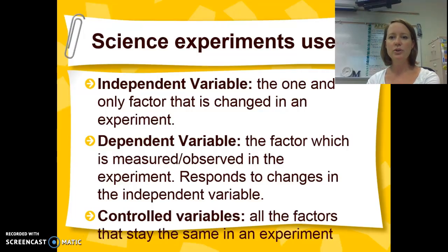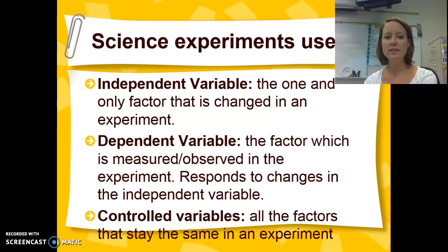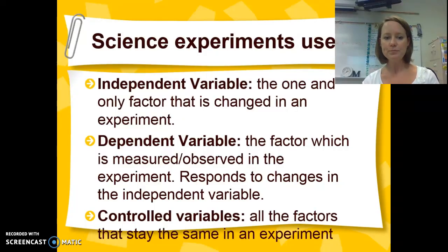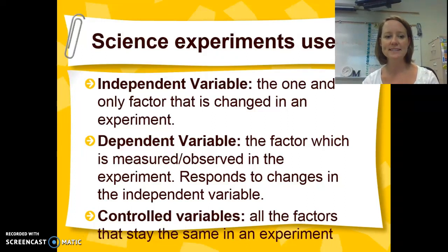An independent variable is the variable that you change in the experiment in each of your trials. The dependent variable is what you are actually measuring, so it depends on the independent variable — these are your results that you are recording. Controlled variables are everything that stays the same.